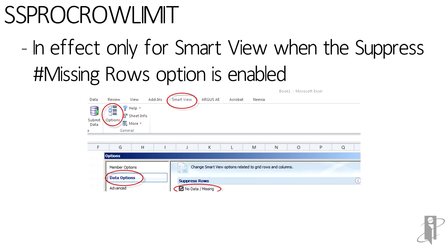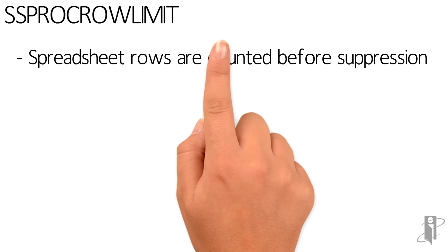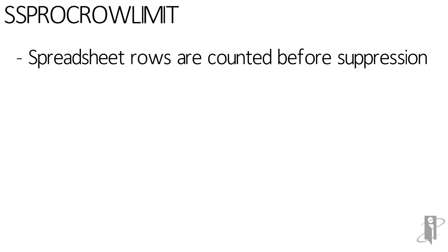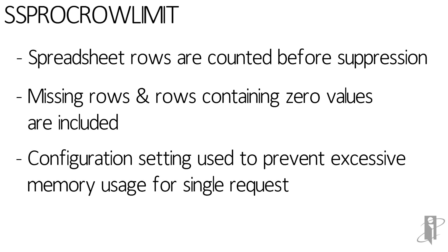If the option for suppress rows pound missing is turned off, the maximum number of rows S-Space will process from a user's request is limited to only 64,000 rows. The rows are counted before suppression, which means missing rows and rows containing zero values are included. Essentially, this config setting is used to prevent excessive memory usage from a single user request.